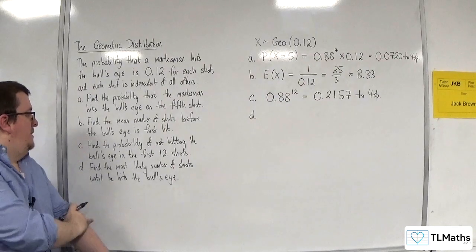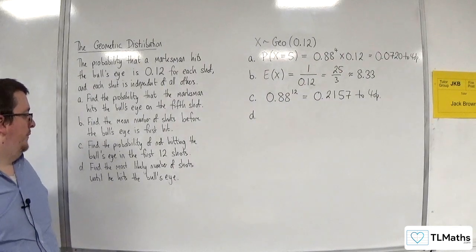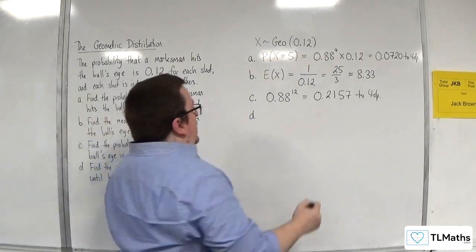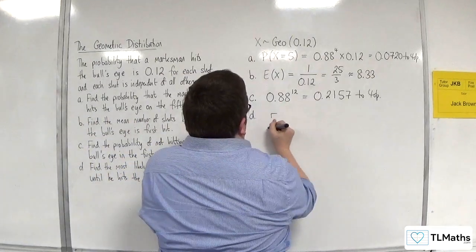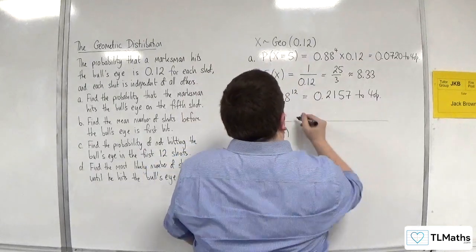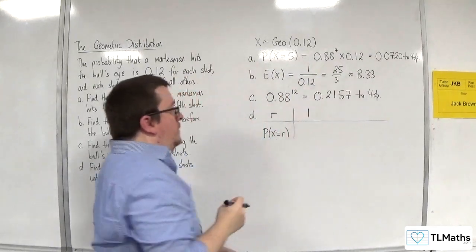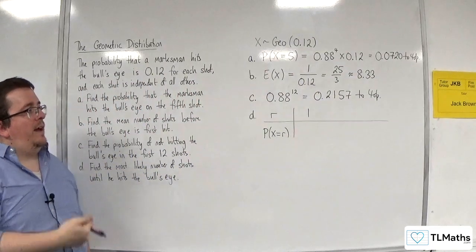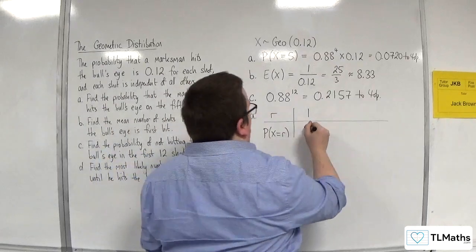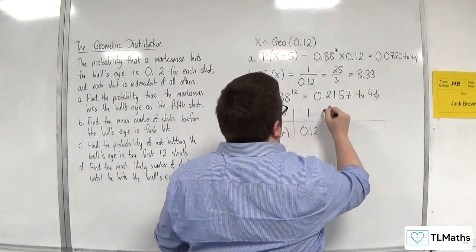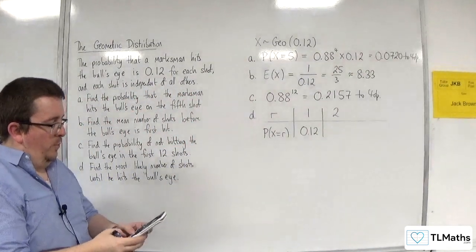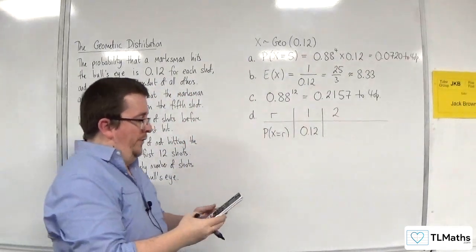Now, part D: find the most likely number of shots until he hits the bullseye. Well, if we took a look at the distribution, the probability that he hits the bullseye on the first shot is 0.12.